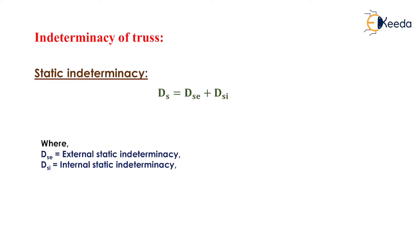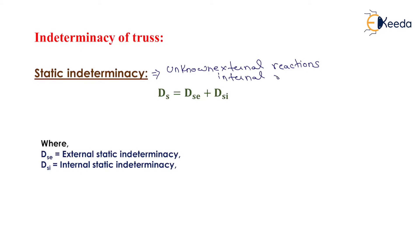We need to find the static indeterminacy as well as the kinematic indeterminacy. Static indeterminacy refers to all the unknown forces — that is, internal reactive forces as well as external reactive forces — which cannot be determined by the theory of equilibrium alone.